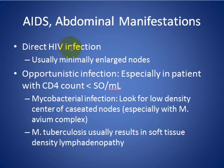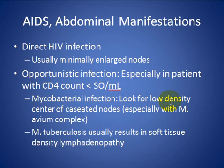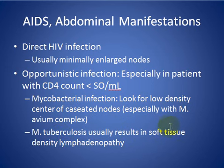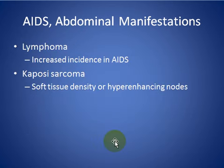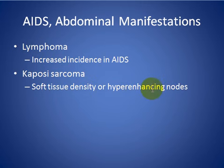AIDS: direct HIV infection usually causes minimally enlarged nodes. Opportunistic infections, especially in patients with CD4 count less than 50 cells/mL, should be considered. Look for mycobacterial infection with low-density lymphadenopathy; mycobacterium avium-intracellulare and mycobacterium TB usually result in soft tissue density lymphadenopathy. Lymphoma and Kaposi's sarcoma have increased incidence in AIDS patients, with high-density soft tissue or highly enhancing nodes.